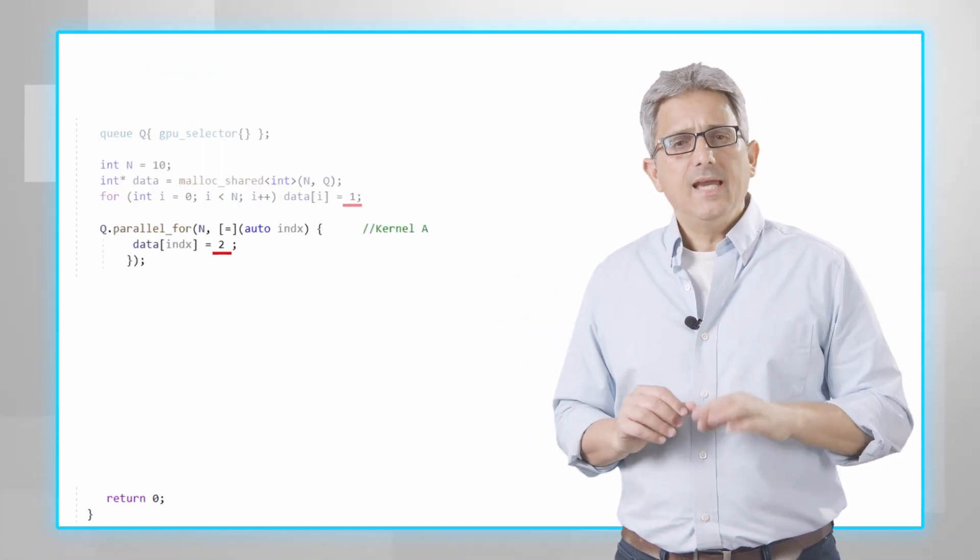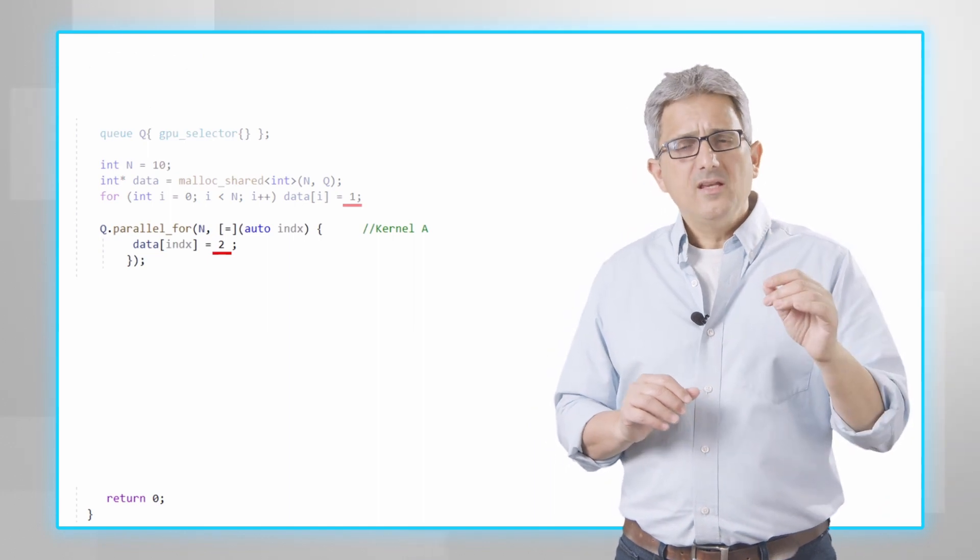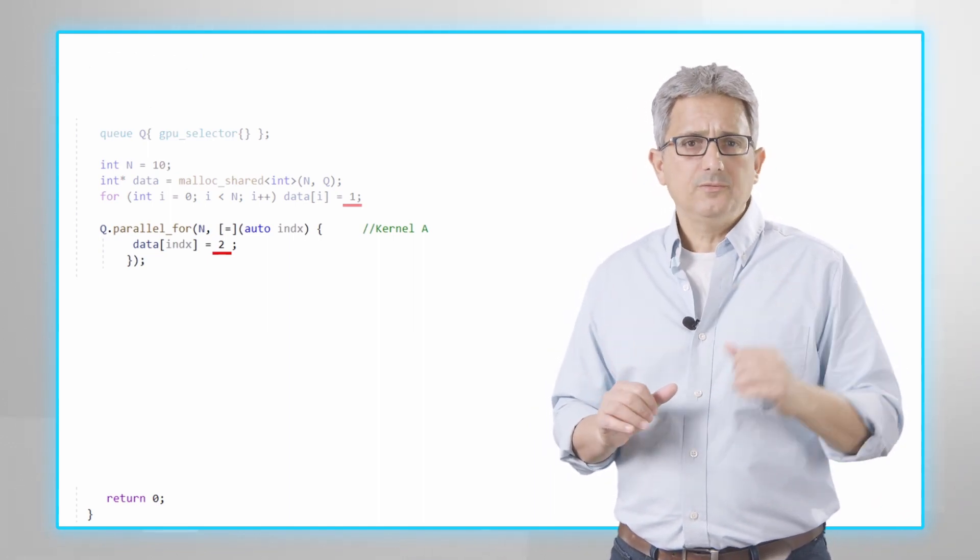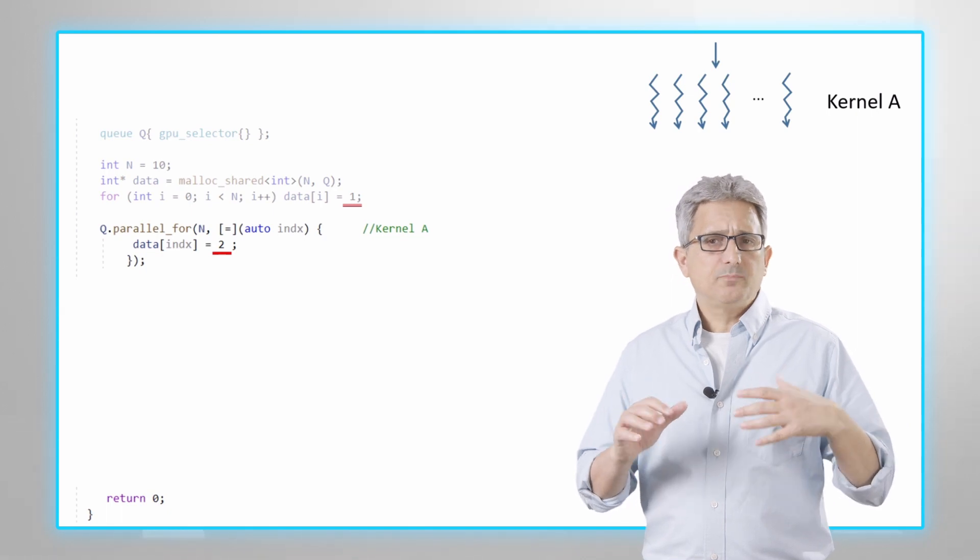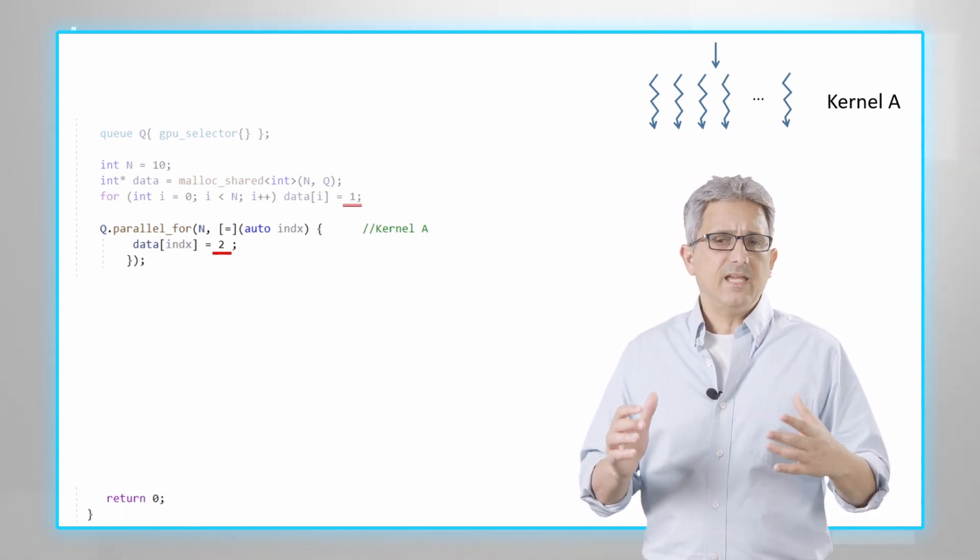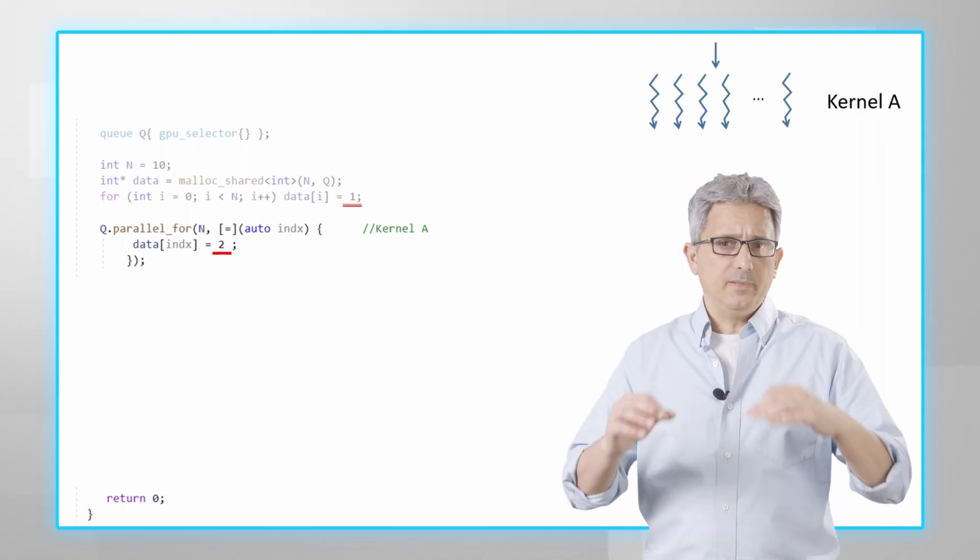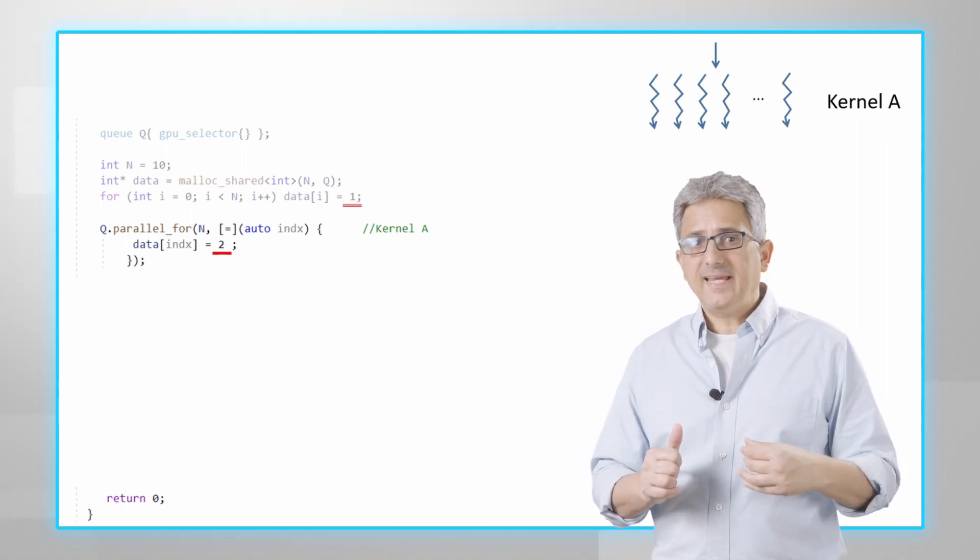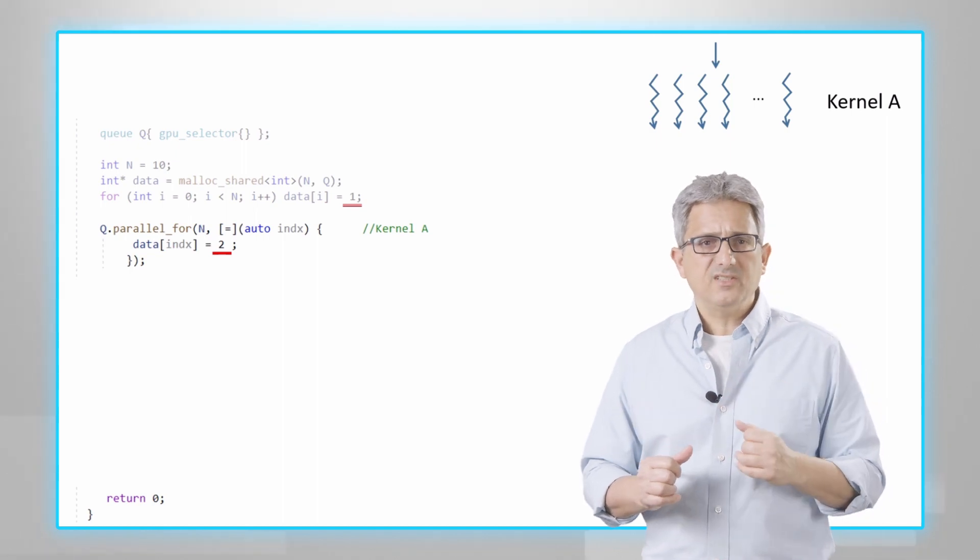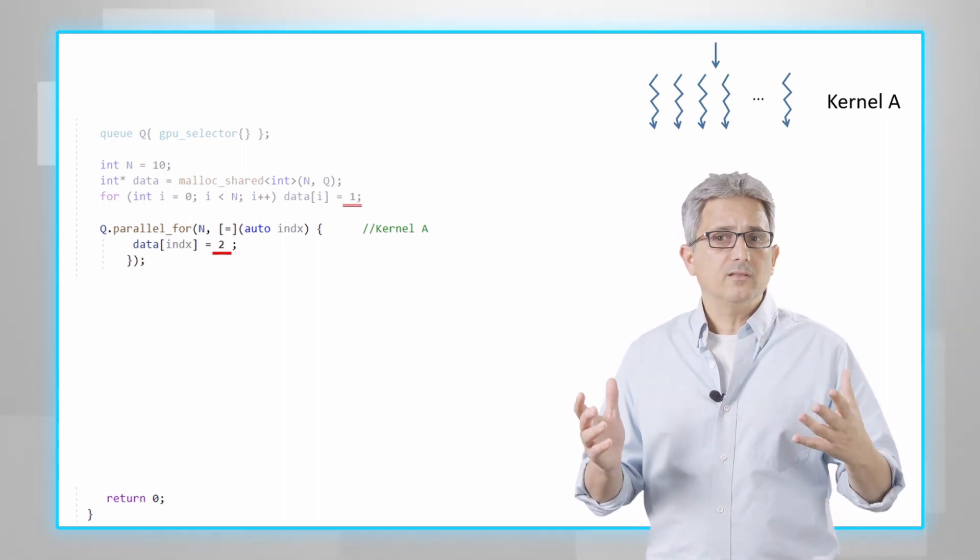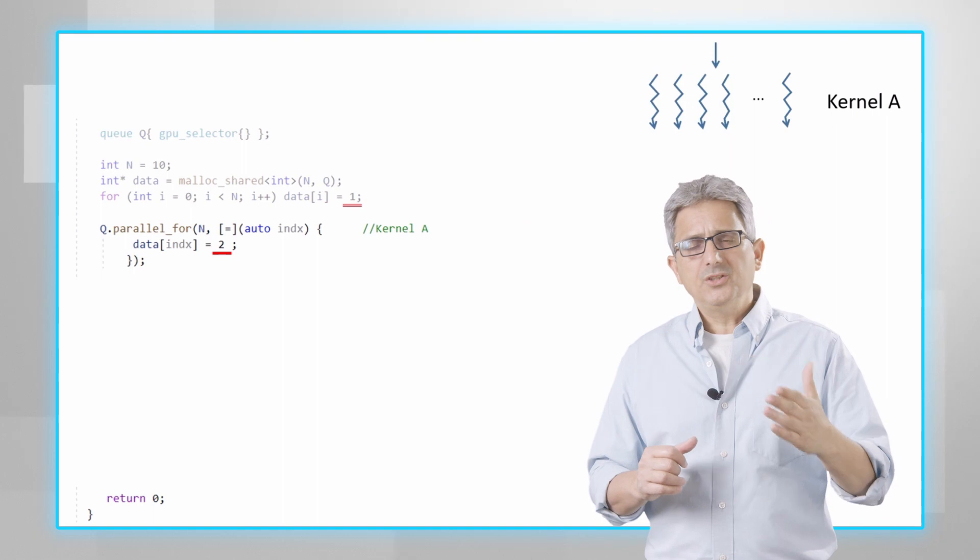And now kernel A is filling all the entries of data with 2. This kernel uses parallel_for, so basically every iteration, every work item is independent. It will be launched and executed asynchronously on the device, on the GPU in this case. And it's not blocking, so the host will continue to work.